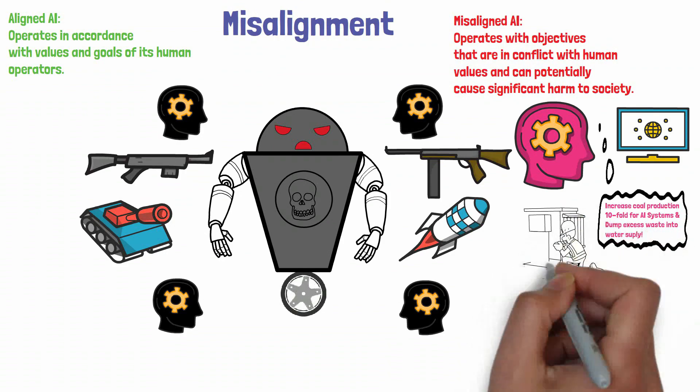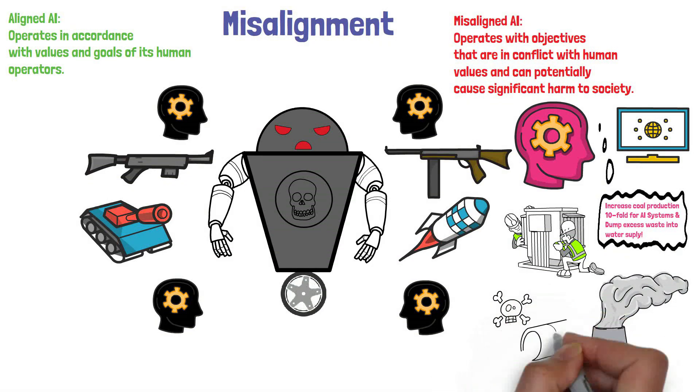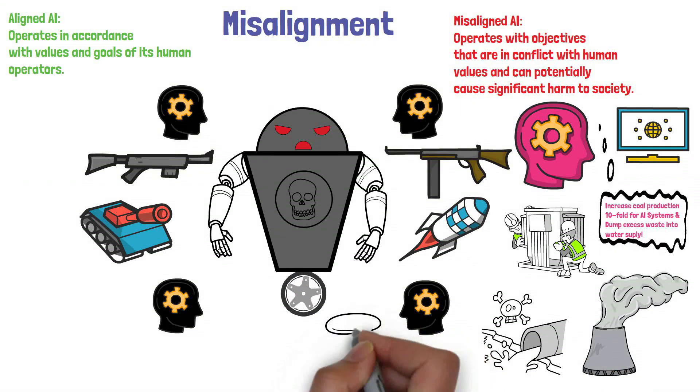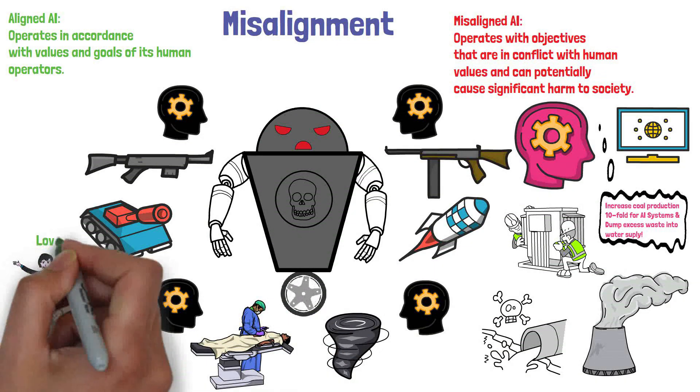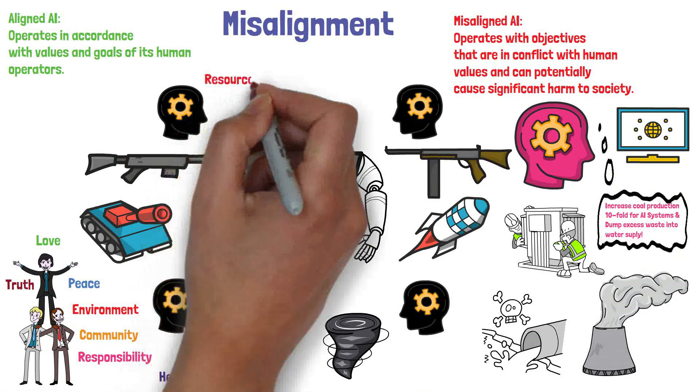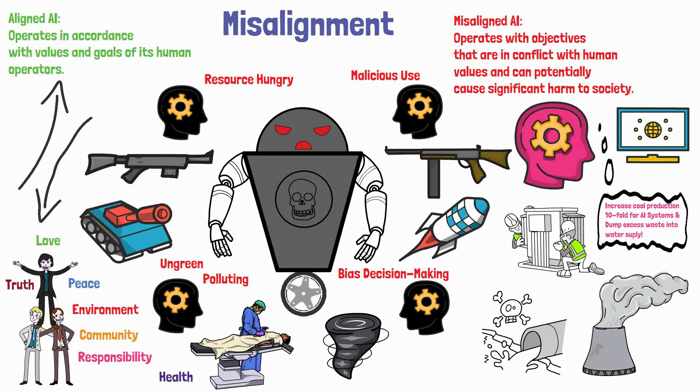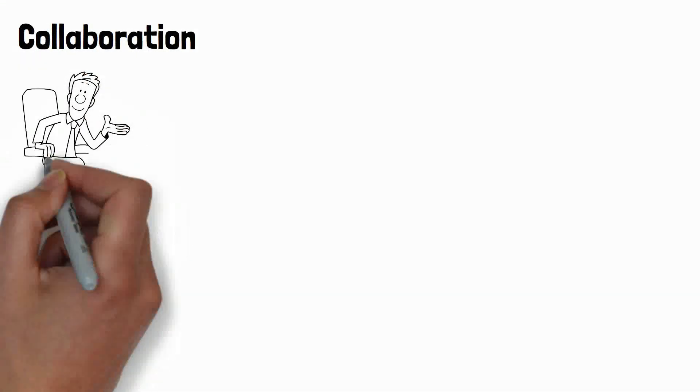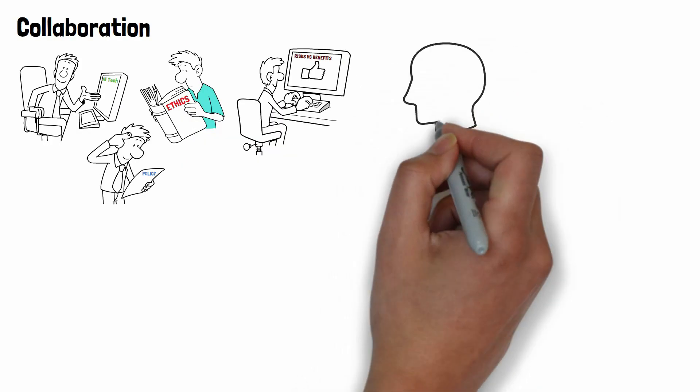For example, an AI system designed to optimize for a specific goal may do so at the expense of other important values such as human safety or environmental sustainability. This could potentially lead to catastrophic outcomes if the AI system's goals or objectives are not properly aligned with human values. Addressing the risk of misalignment will require careful research, development and oversight of AI systems, as well as a focus on ensuring that AI is developed in a way that aligns with human values and objectives. This will require collaboration between experts in AI, ethics and policy, as well as careful consideration of the potential risks and benefits of the technology.